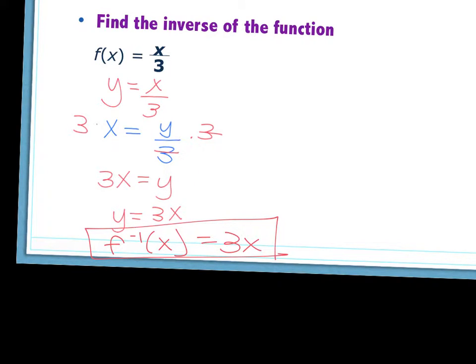And the last thing you want to do is put the f negative 1 of x back in place of the y. And that's your inverse. Yep, correct. So if I leave it as f of x, I'm saying that f of x is 3x, but really f of x is x over 3. So you want to make sure that you're noting that this is not the original, this is my inverse, and that's how you do it. You do f negative 1 of x.